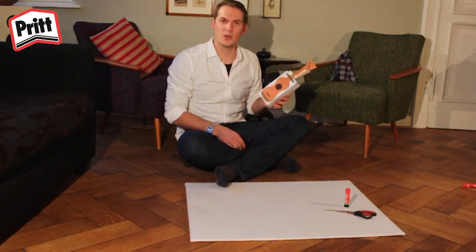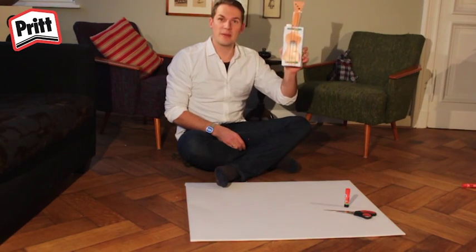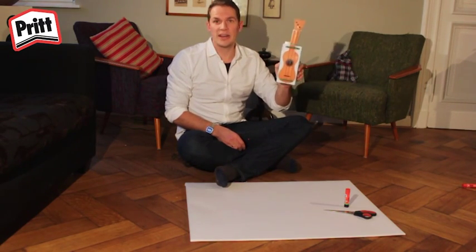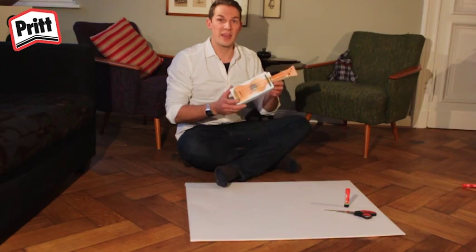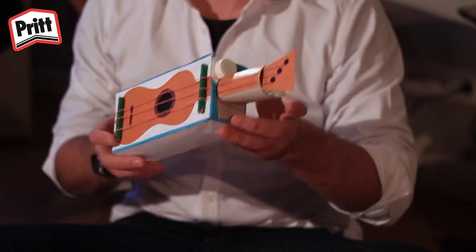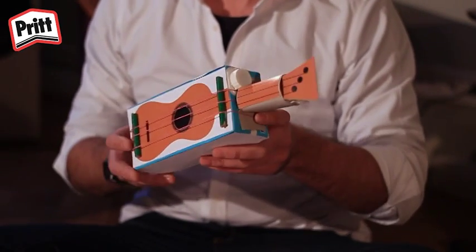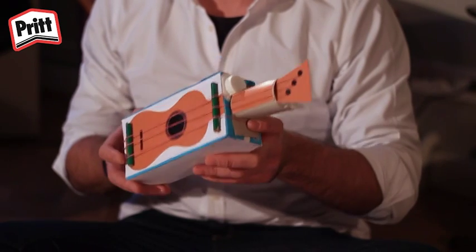Hallo jongens en meisjes, ik ben Gordon. Vandaag maken we de ukelele. De ukelele is een kleine gitaar uit Hawaii, een eiland in de stille oceaan. De ukelele is de laatste jaren heel populair omdat hij zo klein is.